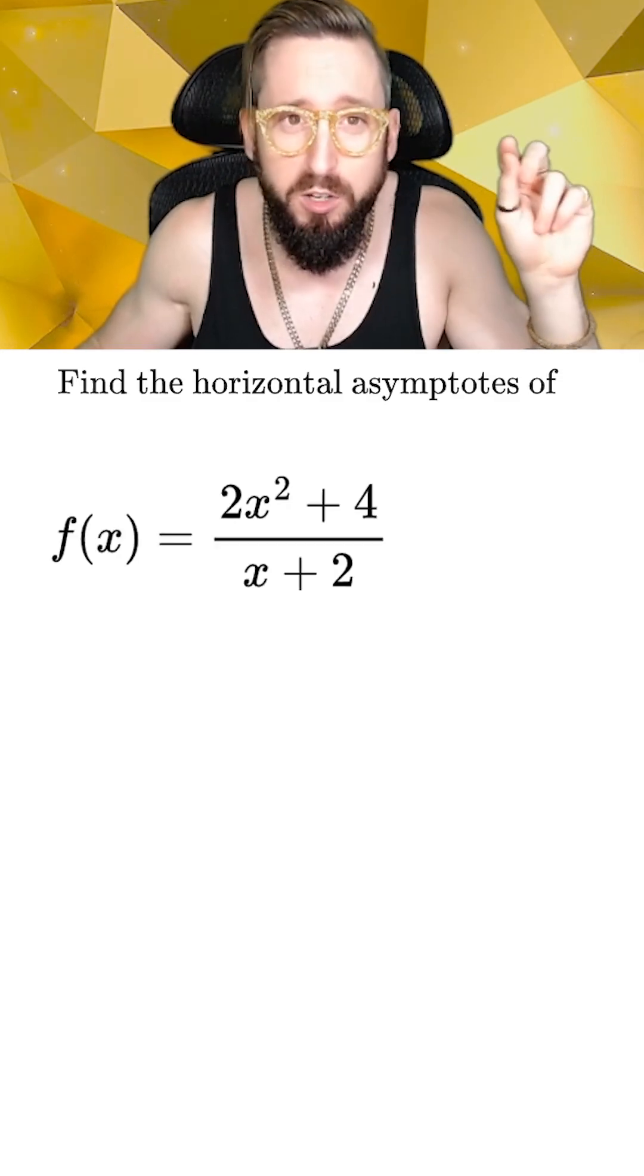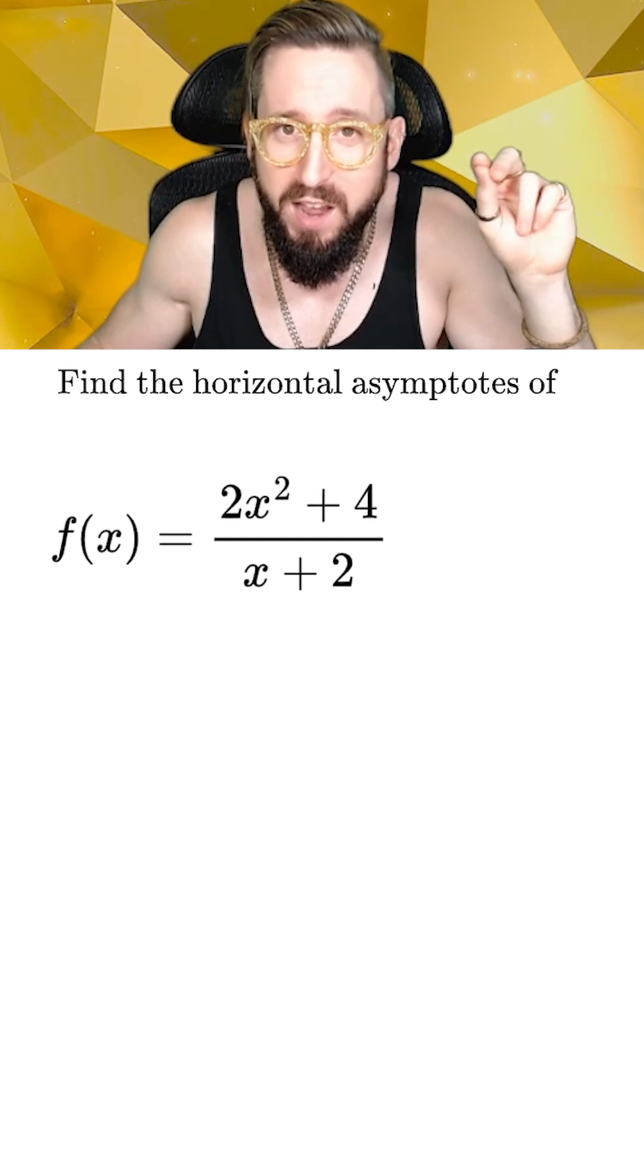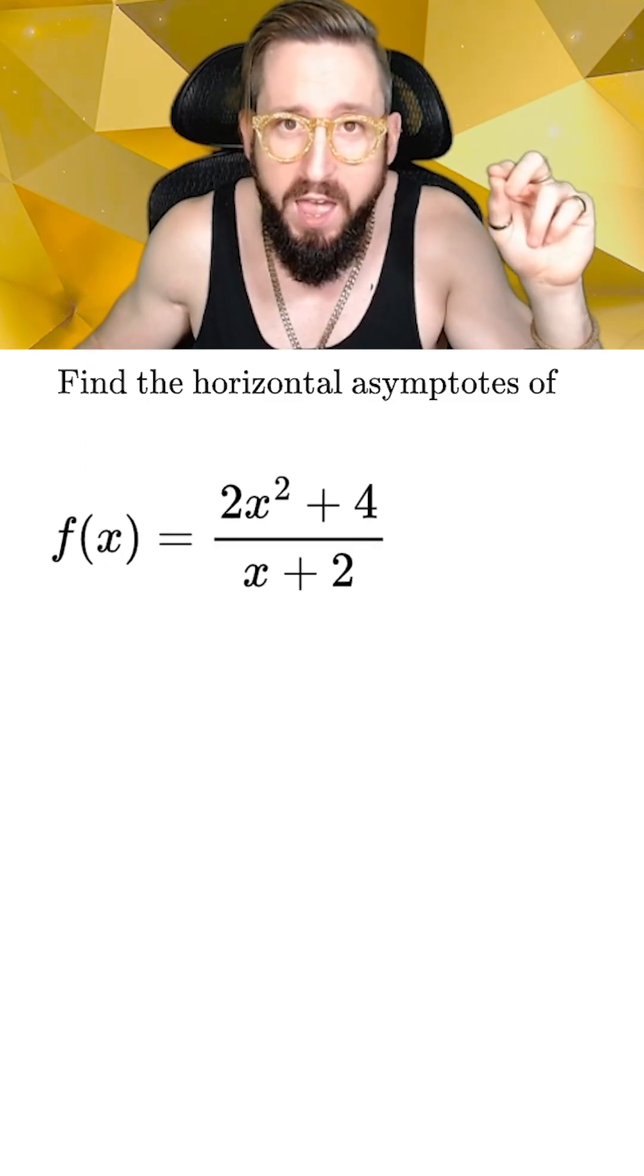Now there's one special case you have to look out for when finding horizontal asymptotes, and this occurs when the highest effective power of x on the top is exactly one more than the highest effective power on the bottom. When this happens, we need to do polynomial long division first before taking our limit at infinity.